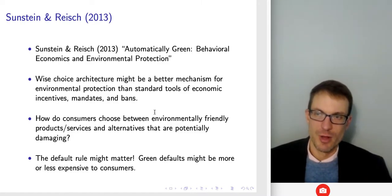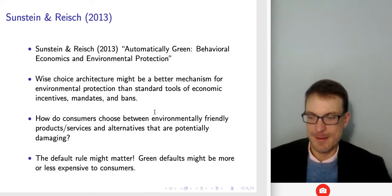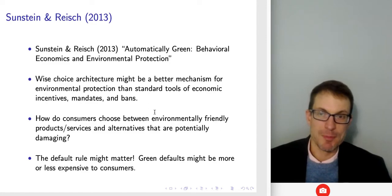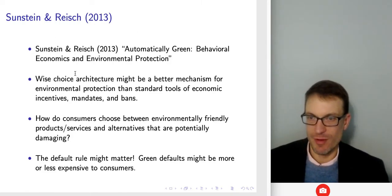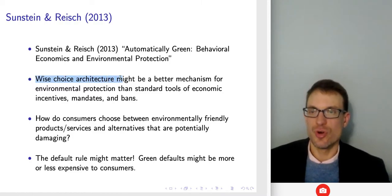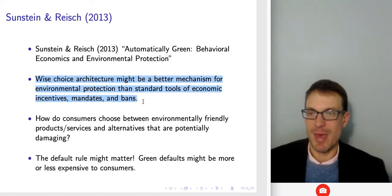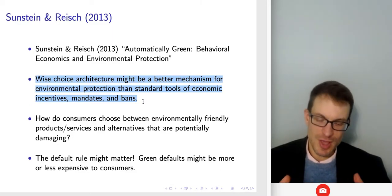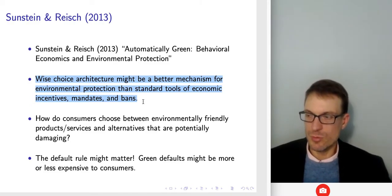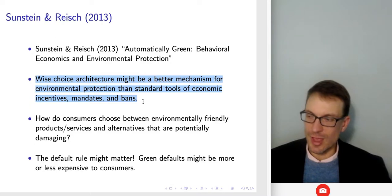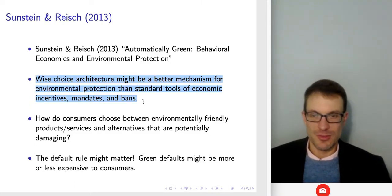Shifting gears to focus on the application of nudge and optimal paternalism ideas to environmental choices — in the paper 'Automatically Green: Behavioral Economics and Environmental Protection,' the observation is that wise choice architecture might be a better mechanism for environmental protection than standard tools of economic incentives, mandates, and bans. If we set up choice architecture carefully with the right status quo and the right opt-in/opt-out system, we could retain as much individual autonomy as possible while leading us collectively toward a better outcome.